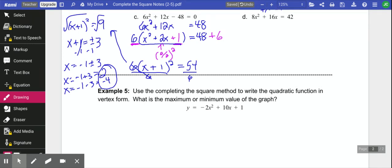Let's do D. It's a very similar problem. They already have the constant term moved over. That was nice. So now what we need to do is we have this 8x squared. We're going to need to factor out that 8. Don't factor out any x's. So that's x squared plus 2x. And the 42, we haven't done anything to that. Just leave it.